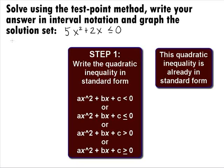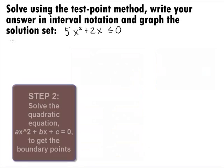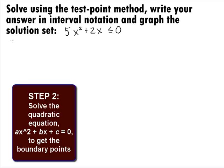This inequality is already in standard form. In Step 2, we want to set up what we found in Step 1 as the quadratic equation and solve it to get the boundary points. The boundary points will mark off where the quadratic expression is equal to 0. This is like the crossover point, since 0 is neither positive nor negative.